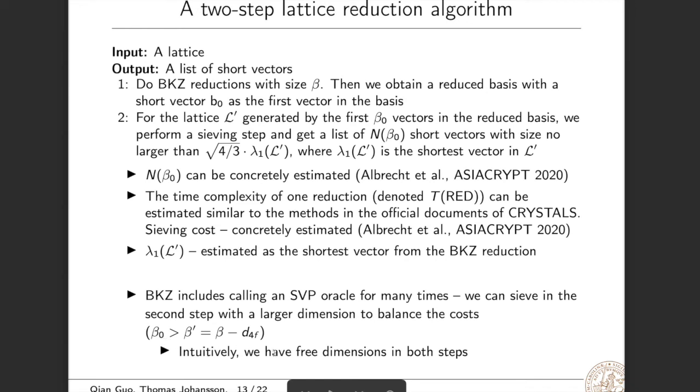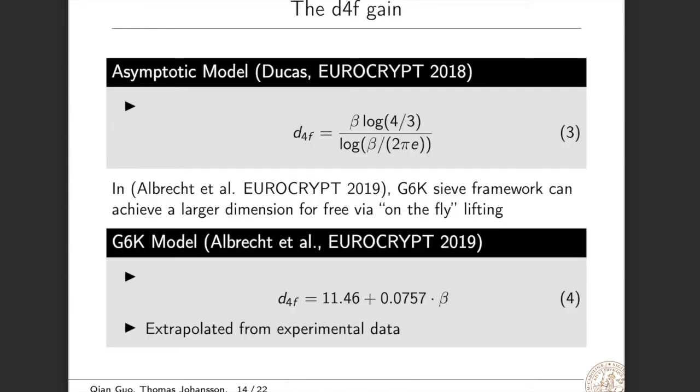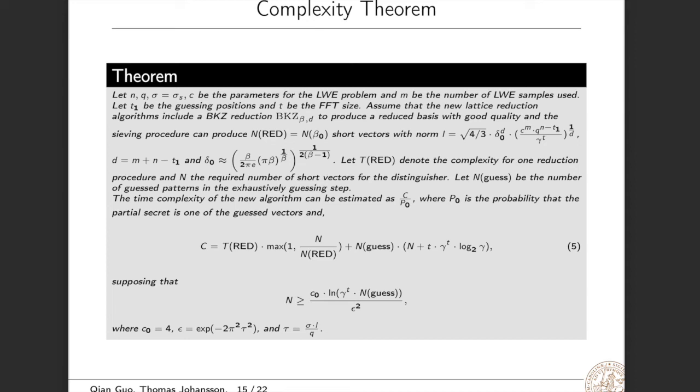The dimension-for-free gain can be estimated by two models. The first model was first proposed by Ducas using asymptotics. So this is called the asymptotic model. Later, Albrecht et al. showed that the BDGL framework can achieve larger dimensions-for-free via a technique called on-the-fly lifting. So they get an extrapolation model from experimental data. We will use both models to study the concrete complexity.